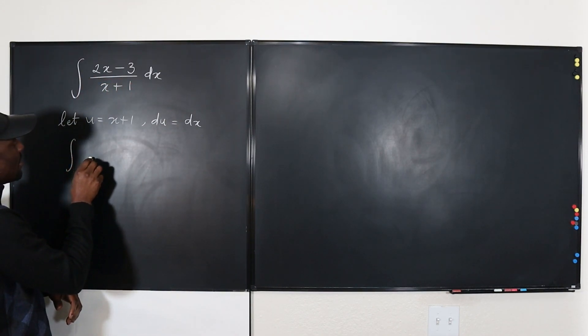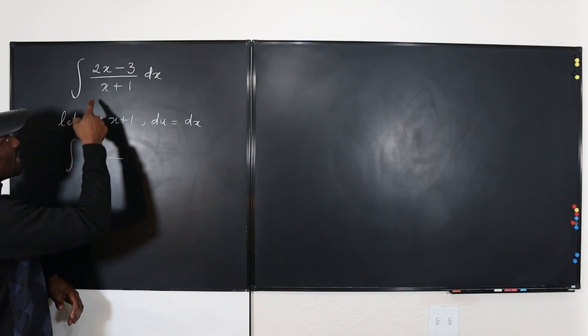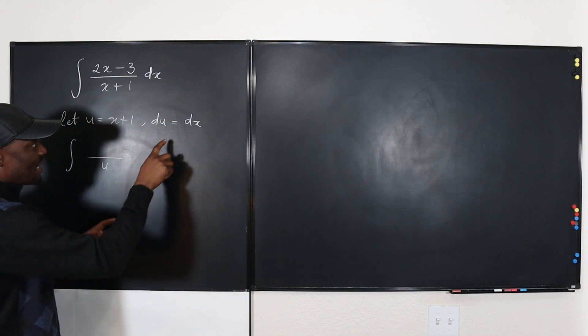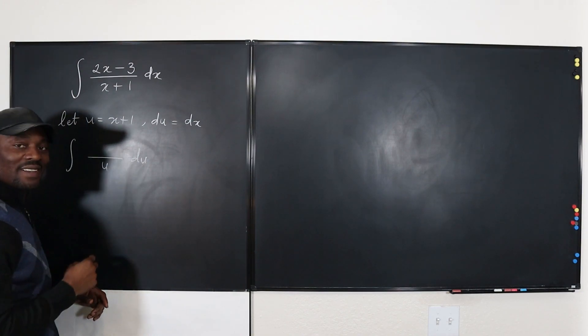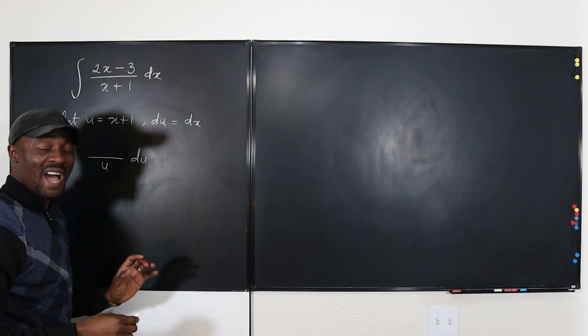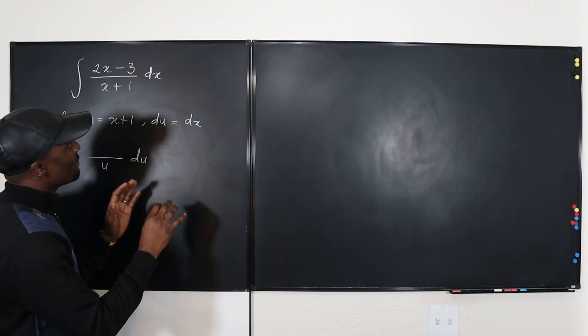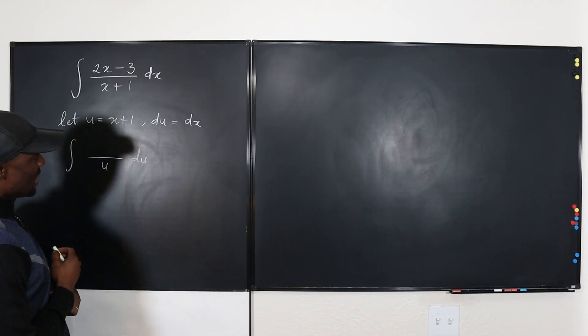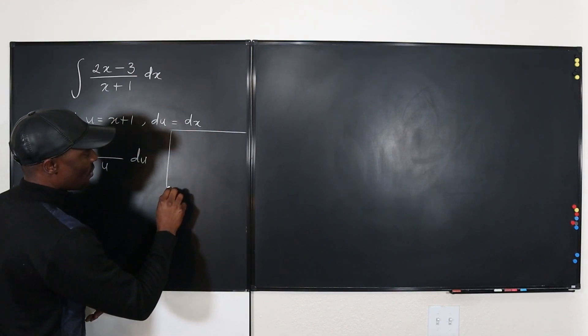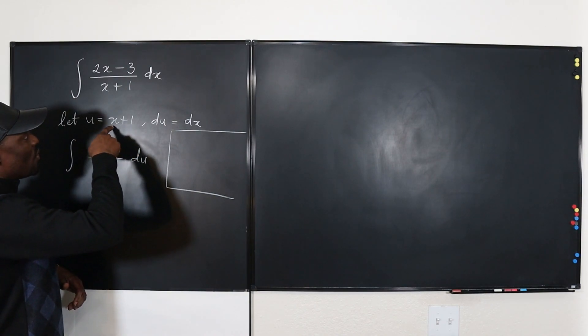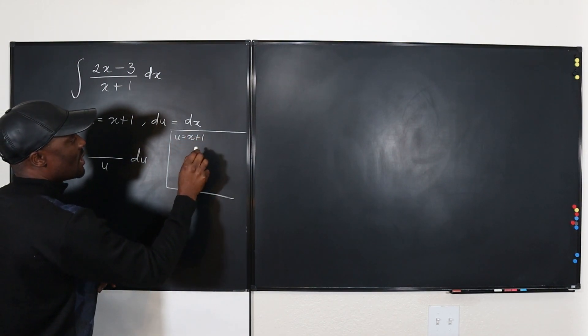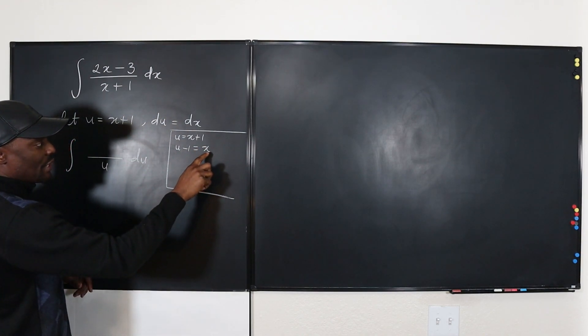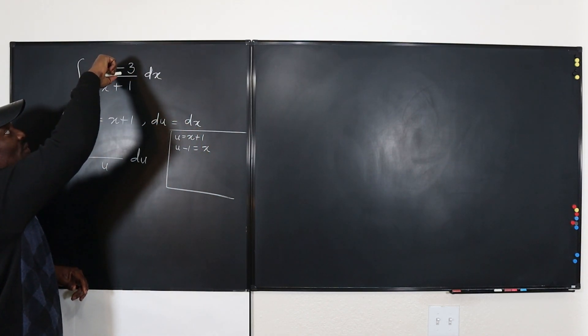It means if I write this expression, the bottom is going to be U. But what's the top going to be? I don't want to have any X there. I can replace DX with DU. But I don't want to have this, because what I have here is still in terms of X. I have to write that in terms of U. Since I said my U is X plus 1, what can X be? X is going to be U minus 1. So if U equals X plus 1, then it means that U minus 1 is equal to X. I found my X.